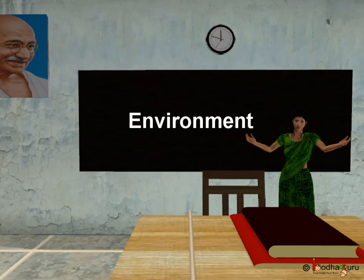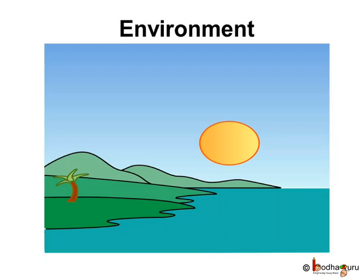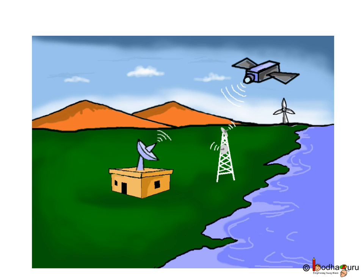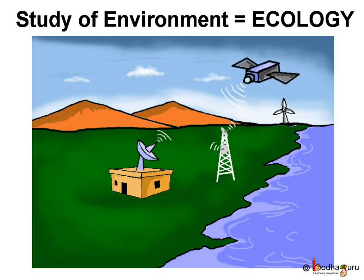Let us study about environment now. What is environment? The natural surroundings of the living things where they live and survive is called environment. Whenever we talk about environment, you must have come across words like ecology or ecologists. What does that mean? The science of studying living things in their natural surroundings or environment is called ecology.